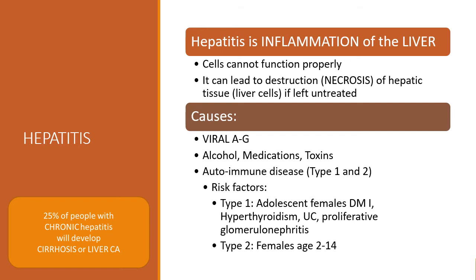Chronic hepatitis occurs when the inflammation has lasted more than six months. It is most often the result of the hepatitis B virus or the hepatitis C virus infection. It's important to note that 25% of people with chronic hepatitis will develop cirrhosis and/or liver cancer.